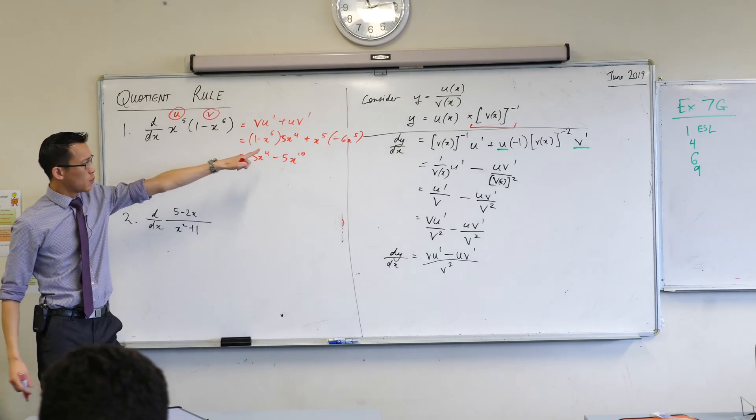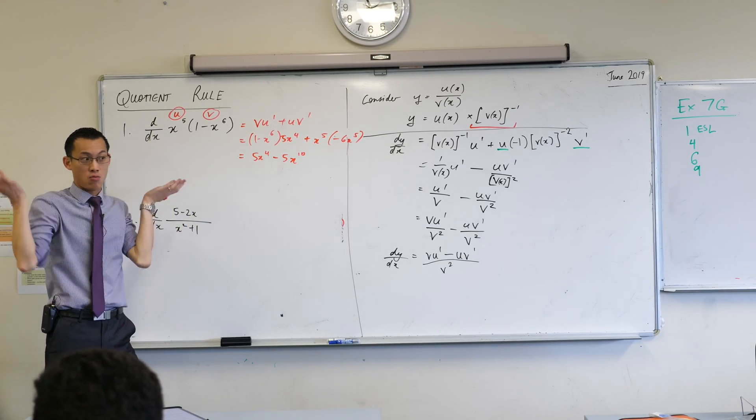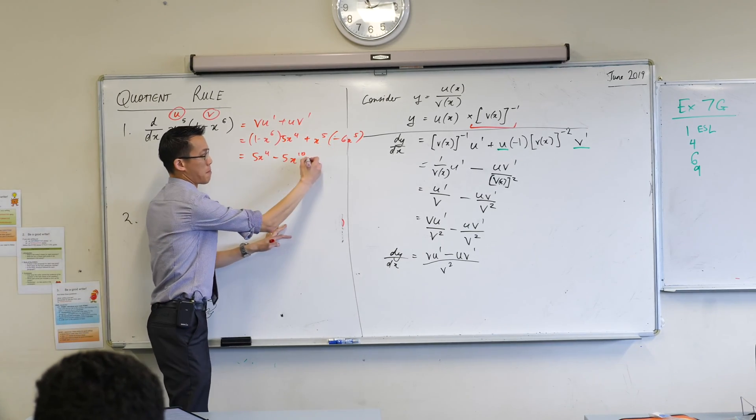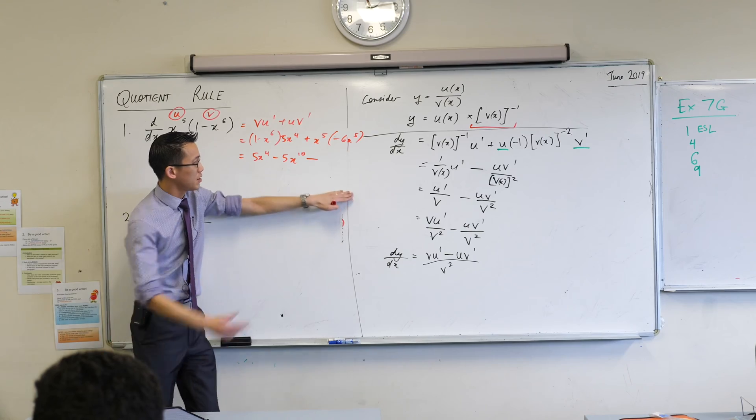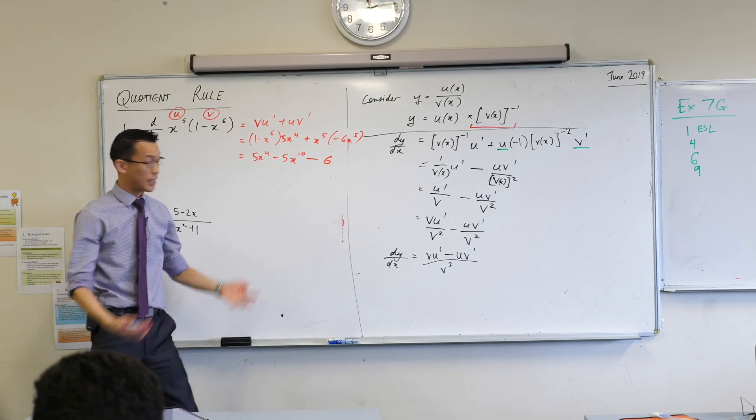And then lastly, what happens to my plus there? It becomes a minus. Why? That guy there, right? So minus, and how many times am I going to get here? 6, 6 what? 6x to the 10. Again, 10.